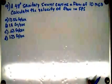If a 48 inch sanitary sewer carries a flow of 10 MGD, calculate the velocity of flow in feet per second.